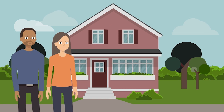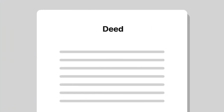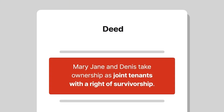Husband and wife Dennis Porter and Mary Jane Porter purchased a home in Alabama. The conveyancing deed specified that Mary Jane and Dennis took ownership as joint tenants with a right of survivorship, meaning that upon either spouse's death, that spouse's interest automatically passed to the other spouse.